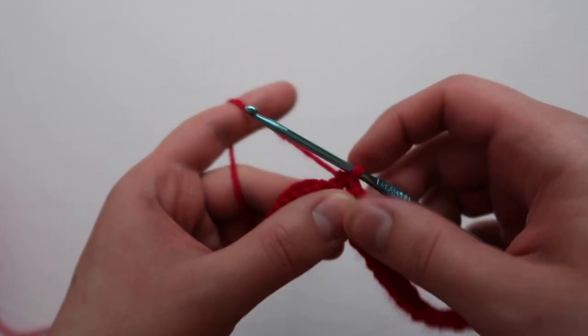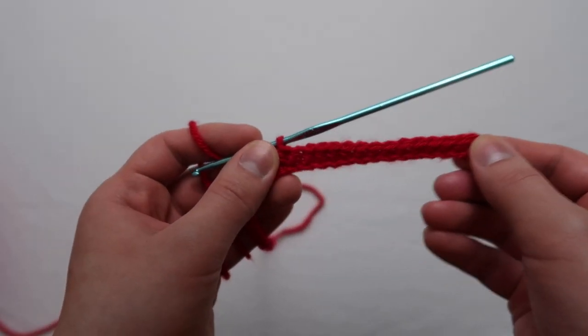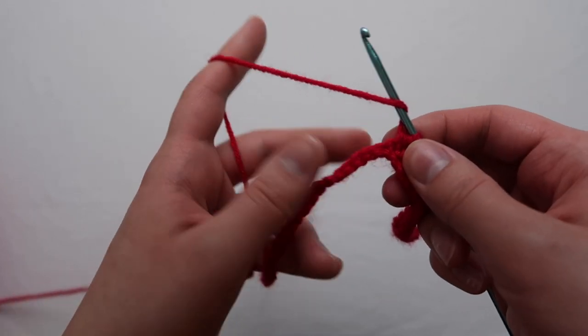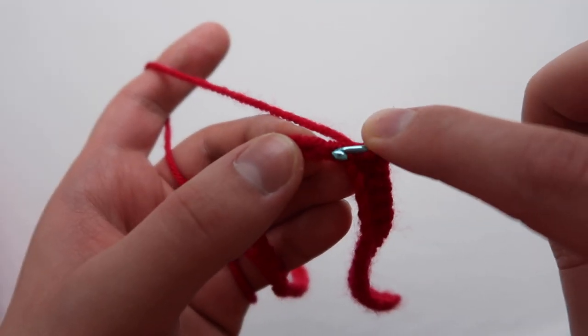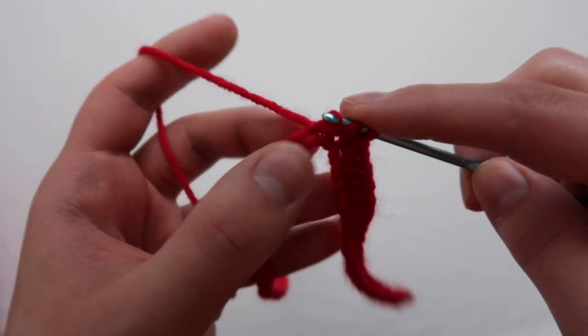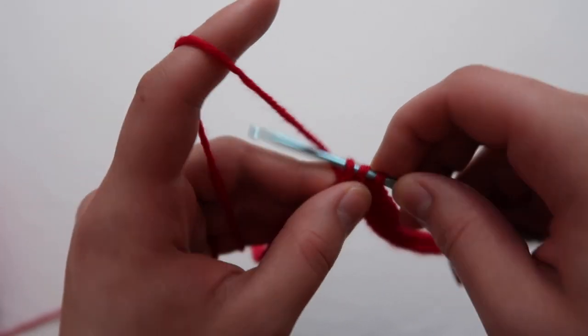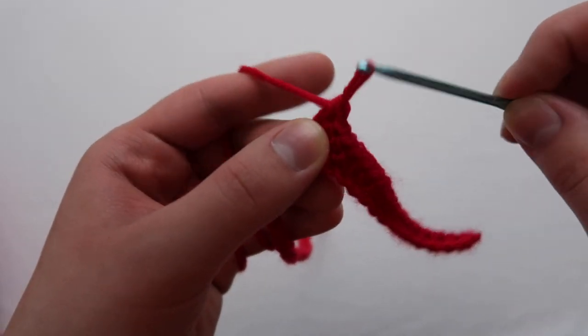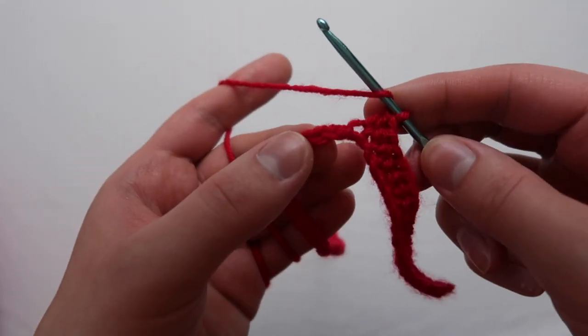After your five half double crochet, the rest of your stitches are going to be regular double crochet. You're going to wrap the yarn around the hook like a half double crochet, except with those three loops you're going to go through two and then go through two again. Keep doing that for the entire rest of the row.